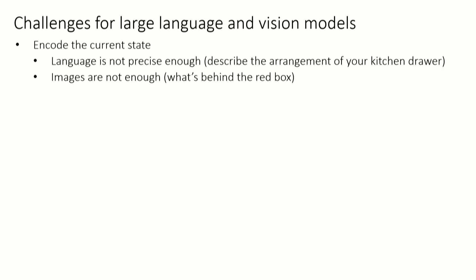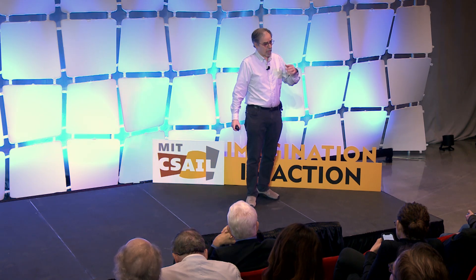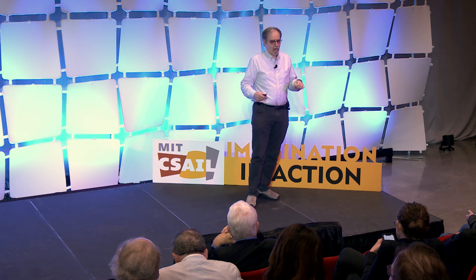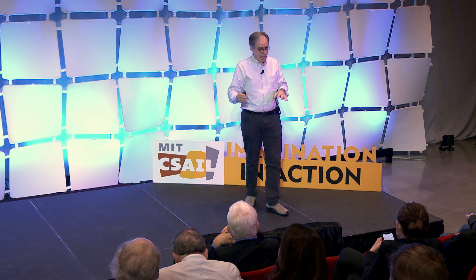There are a few things to remember. Language is actually not super precise in describing these kinds of problems. Think about describing the contents of your kitchen drawers — what are the shapes, what are the things on top of each other? If you try to describe that to a large language model, you're in trouble. And even images are not enough. There's a common assumption in AI that if you give it an image, you know the state.